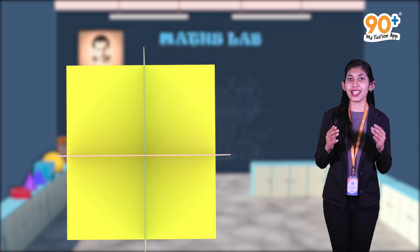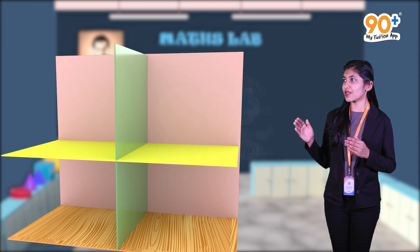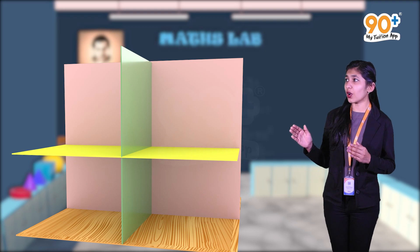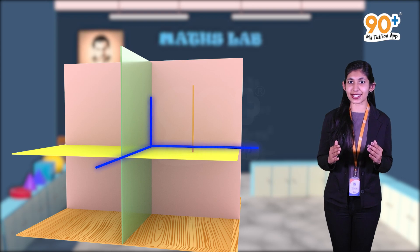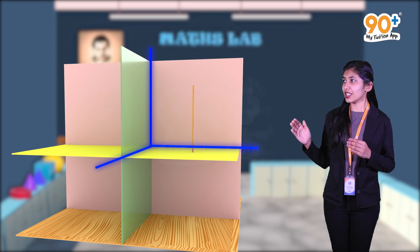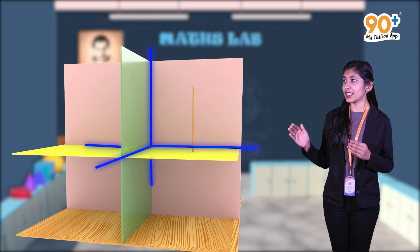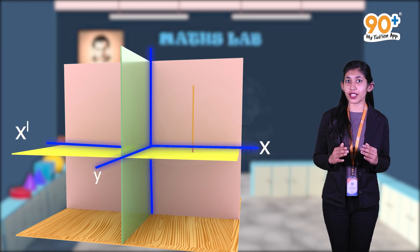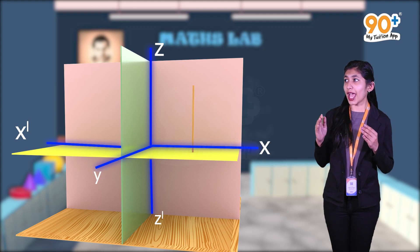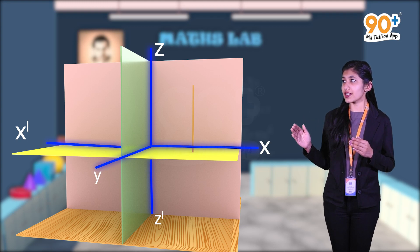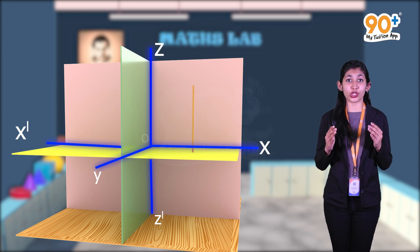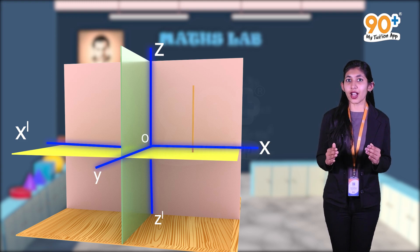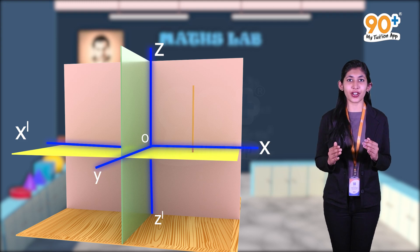Now take a wooden board and fix this model on it. In one of the octants, fix rulers to represent the x-axis, y-axis, and z-axis. Extend each of the axes to the other side to represent x-dash, y-dash, and z-dash. Mark the point of intersection of x, x-dash, y, y-dash, and z, z-dash as the origin O. Here we have constructed the equipment for performing this activity.